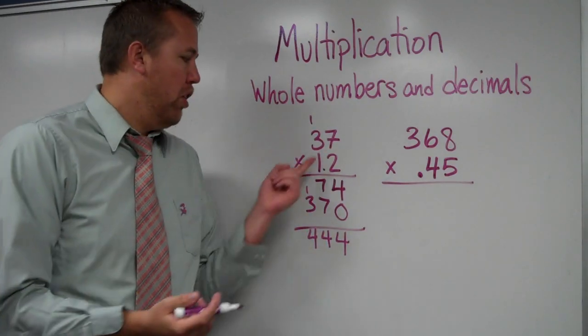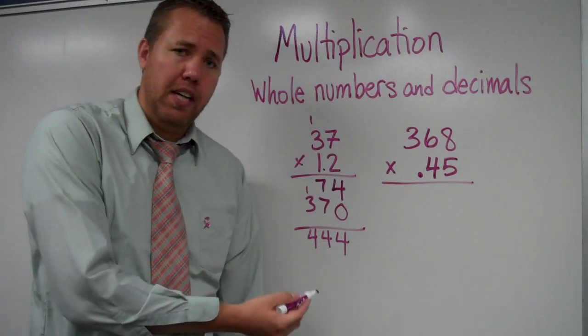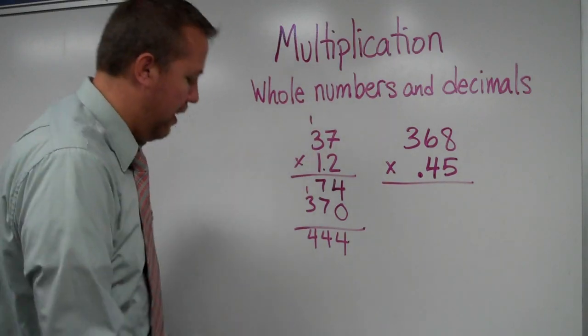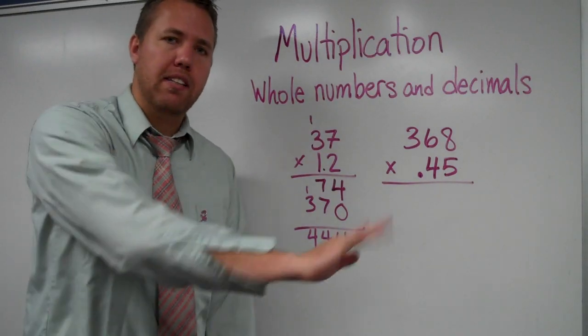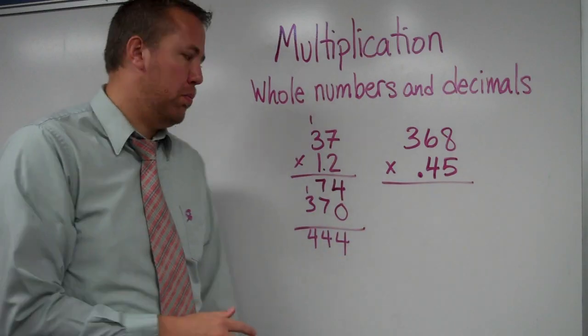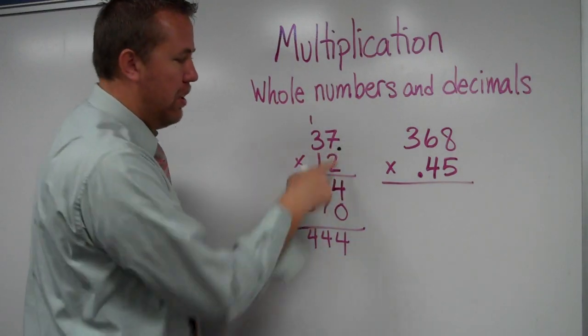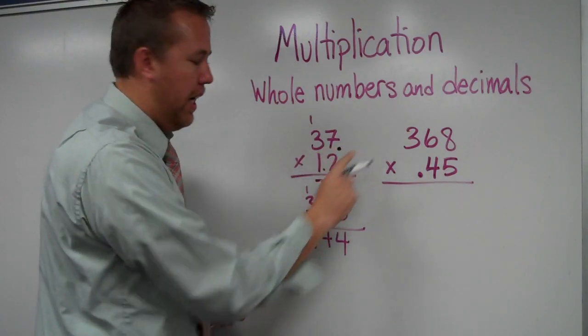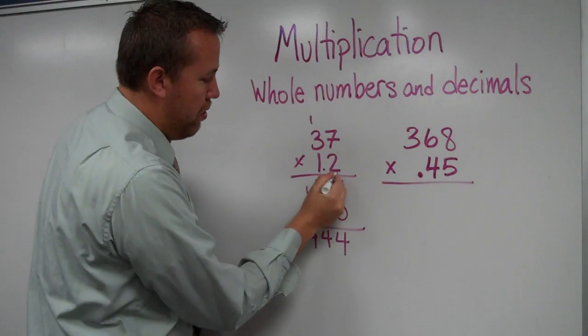Now, here's the trick. When we have a decimal in the problem, we have to have a decimal in the answer. So when I am looking at this, what I'm looking for is any digit that's behind the decimal, to the right of the decimal. I see no decimals because here's our decimal point. There's no digit behind that, and we have one digit behind the decimal.